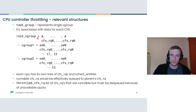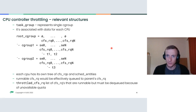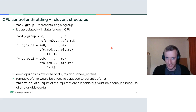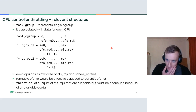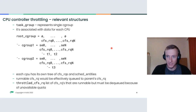Sched entities can be put on or taken off CFS run queues depending on whether they are runnable. Since we are talking about CPU-intensive workloads, all sched entities are runnable most of the time. But when throttling occurs, a runnable CFS run queue that has exhausted its quota is dequeued from its parent and placed on the throttled CFS run queue list, where it must wait until the quota is refilled.